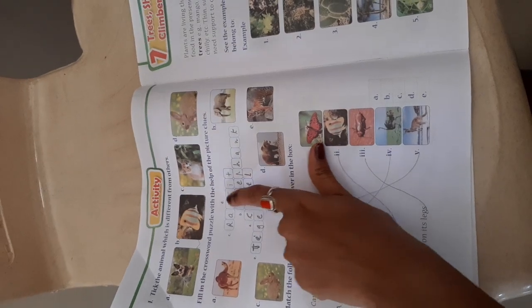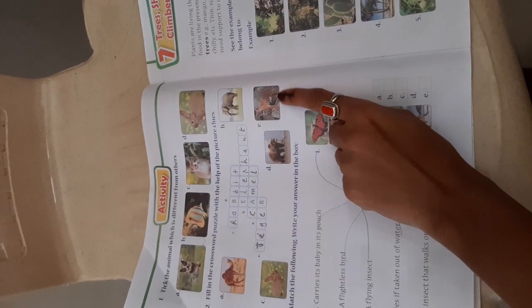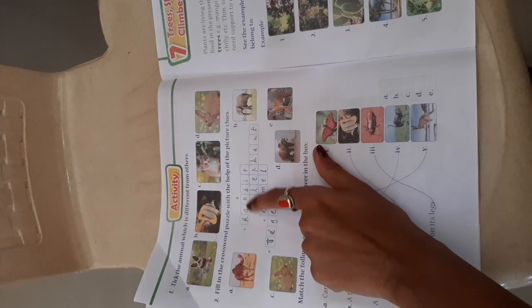First is C. C is rabbit, so you have to write down the spelling of rabbit here.